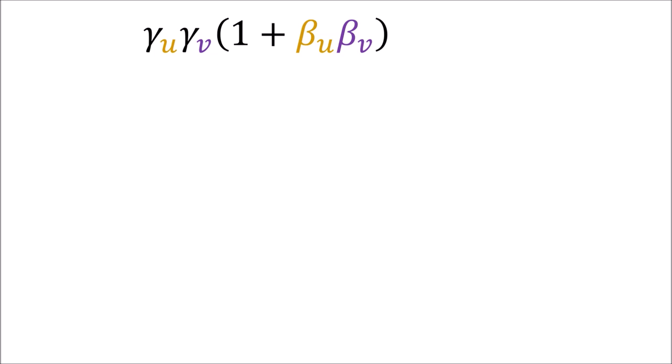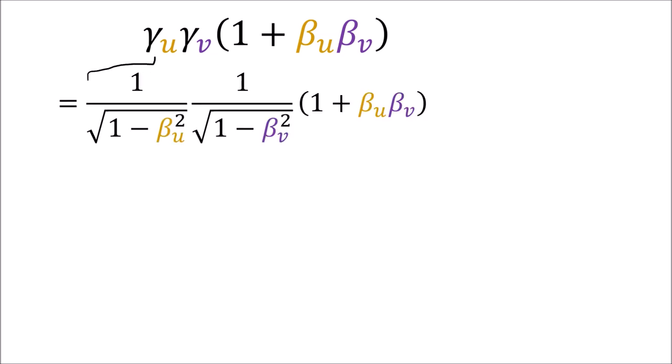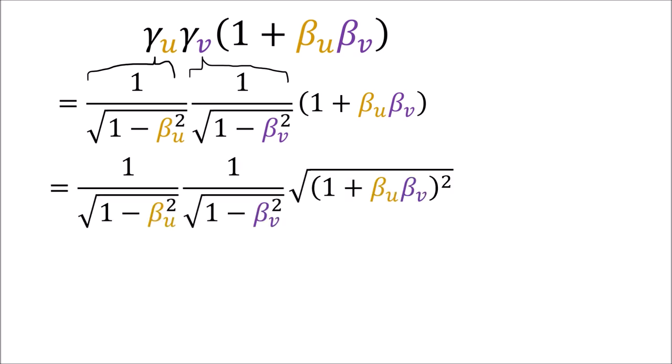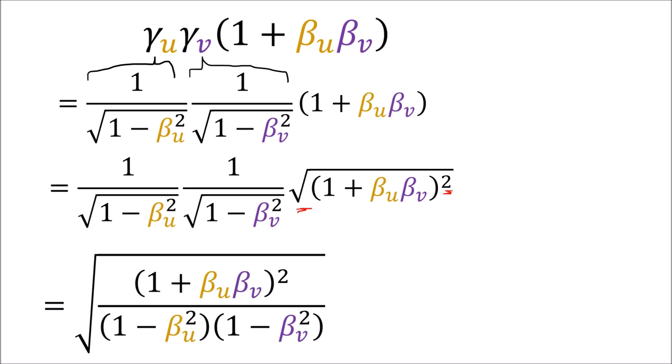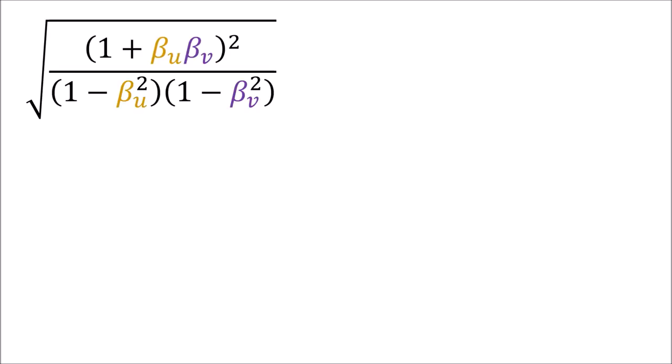We can write each gamma coefficient as 1 over the square root of (1 minus beta-squared) for their respective beta coefficients. We can also take the term (1 plus beta-u beta-v) and square it if we put it under a square root sign — the square and square root balance out, so the equation hasn't changed. Since all three of these terms contain square roots, we can put them all under the same square root sign using the rules of algebra.